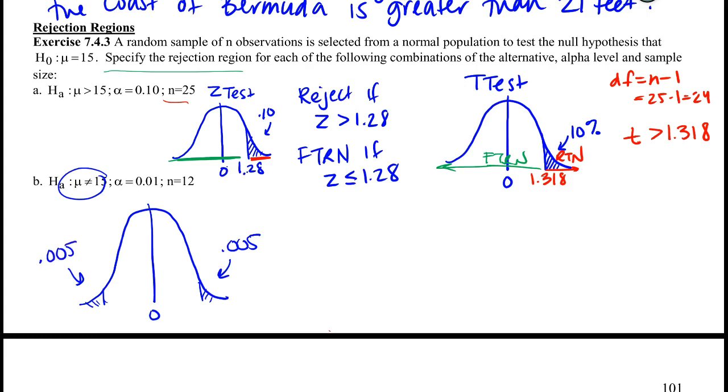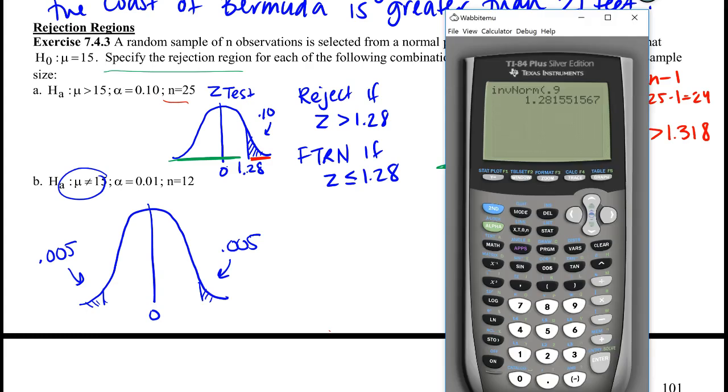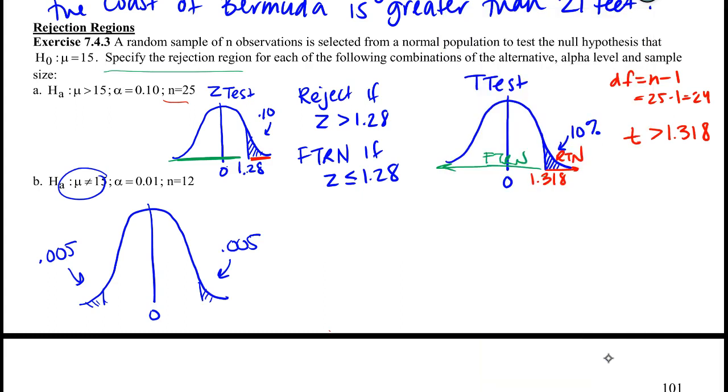And just like before, if we want to do this for the Z distribution, it's not bad. We can just go to inverse norm, and here we actually have a left tail, so we can just type that in. So it looks like we need a negative 2.58, and this would be a positive 2.58.